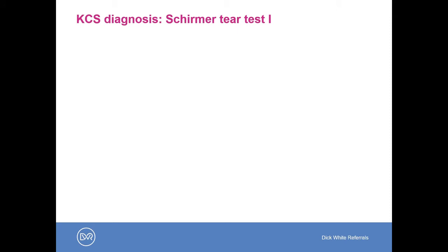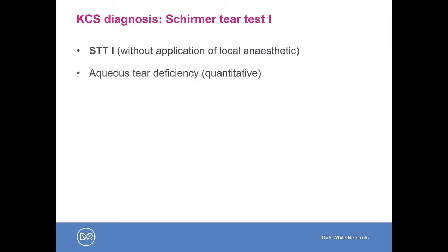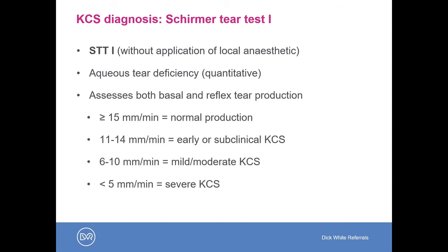We're probably all familiar with the Schirmer tear test, but there are actually two Schirmer tear tests. When we talk about the Schirmer test, we're usually talking about Schirmer tear test 1, which is performed without prior application of topical anaesthetic. This tests for aqueous tear deficiency — it is a quantitative test rather than a qualitative test. Schirmer tear test 1 assesses both the basal and the reflex tear production.